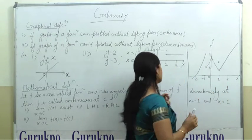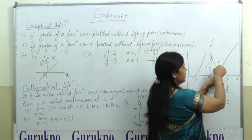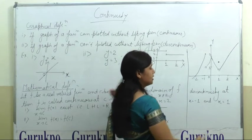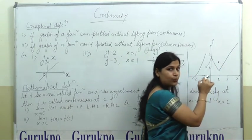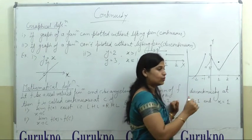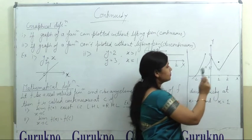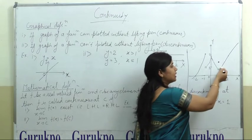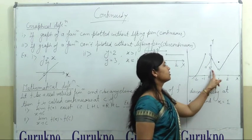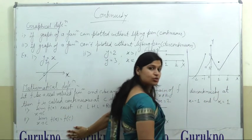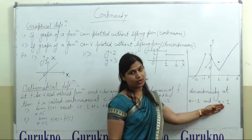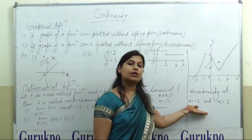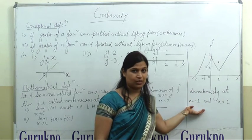At x equals 1, the left-hand limit is 1 and the right-hand limit is 1, so the first condition is satisfied. Now the second condition says the value of the function at x equals 1 should equal the limit value. At x equals 1, the function value is 1.5, but the limit value is 0.5. That means the second condition does not hold, so x equals 1 is also a point of discontinuity. By these applications you can check continuity or discontinuity and find points of discontinuity. Thank you for listening.